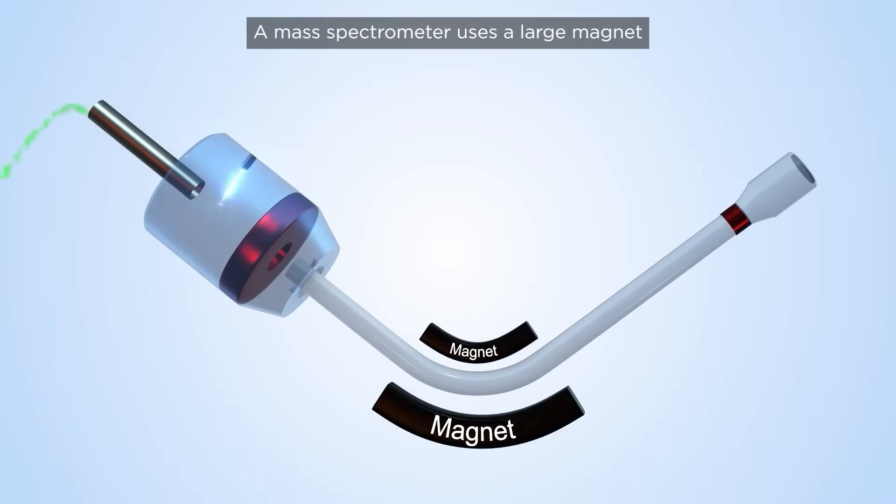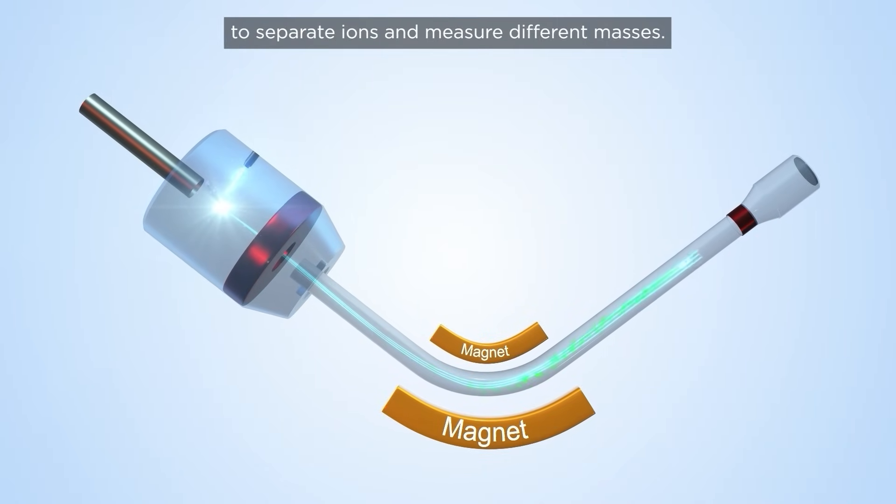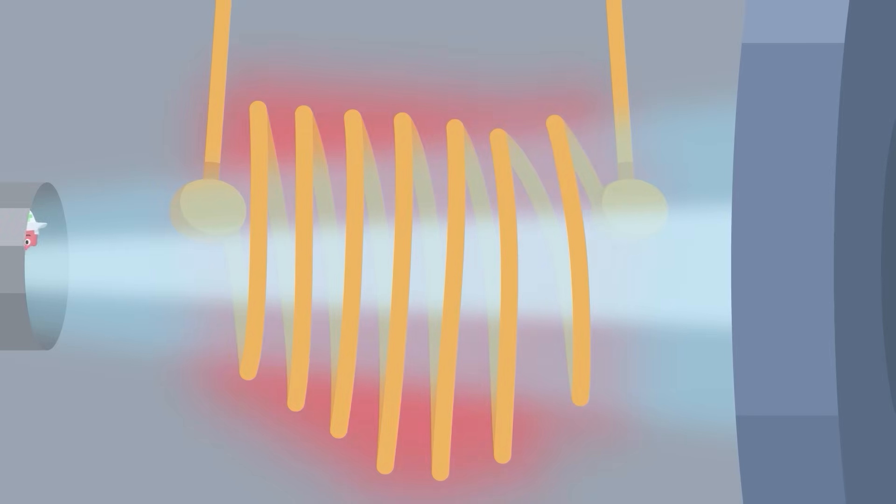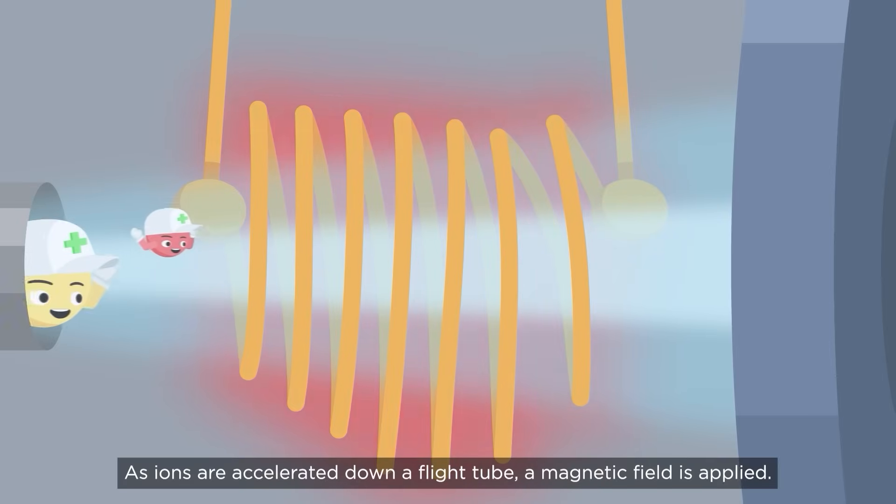A mass spectrometer uses a large magnet to separate ions and measure different masses. As ions are accelerated down a flight tube, a magnetic field is applied.